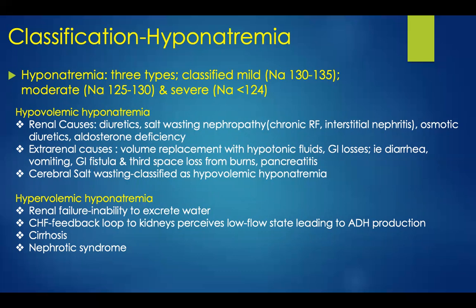We'll begin with hypovolemic hyponatremia. There are renal causes, extrarenal causes, and cerebral salt wasting. Renal causes can include diuretics, salt wasting nephropathy — seen in patients with chronic renal failure and interstitial nephritis — osmotic diuretics, and aldosterone deficiency. Extrarenal causes of hypovolemic hyponatremia include volume replacement with hypotonic fluids, GI losses such as diarrhea and vomiting, GI fistulas, and third-space loss seen in patients with burns and pancreatitis. Cerebral salt wasting is also classified as hypovolemic hyponatremia.